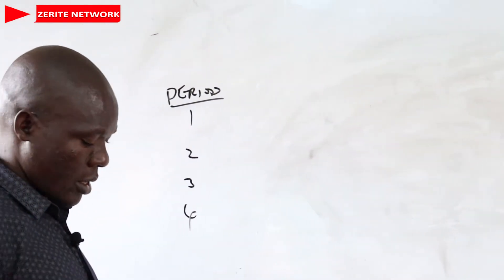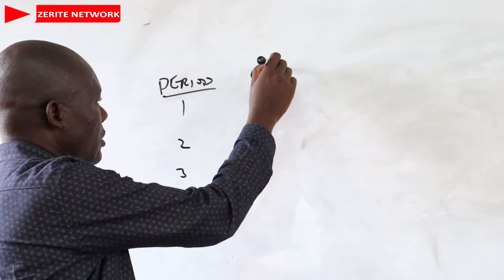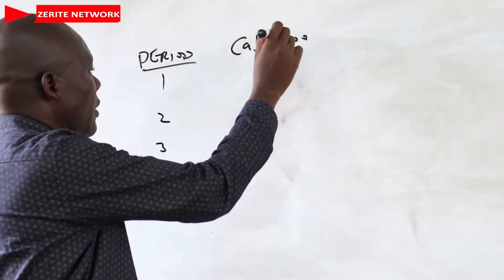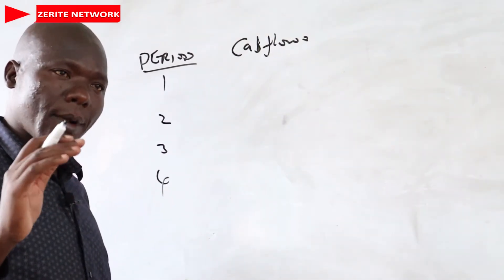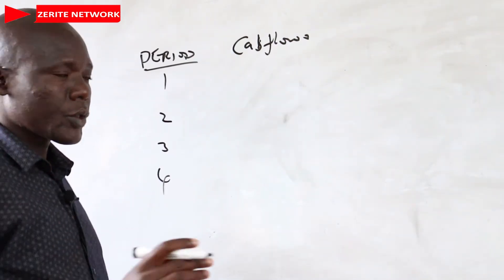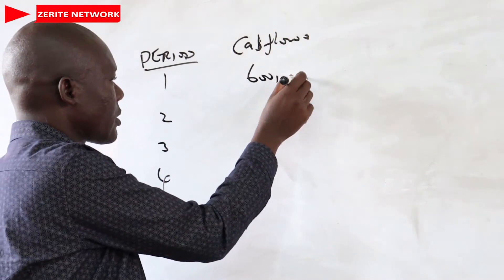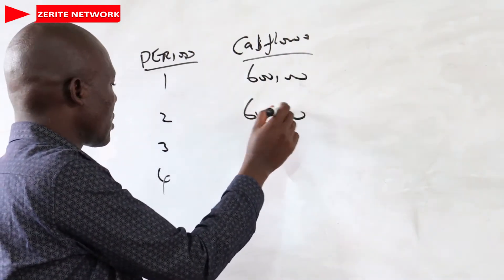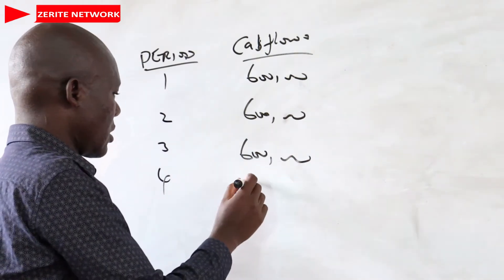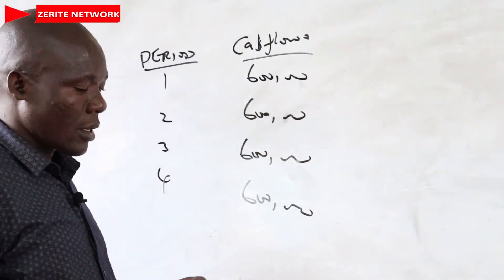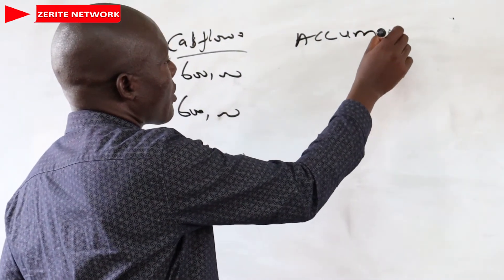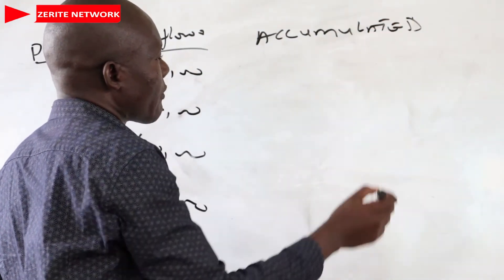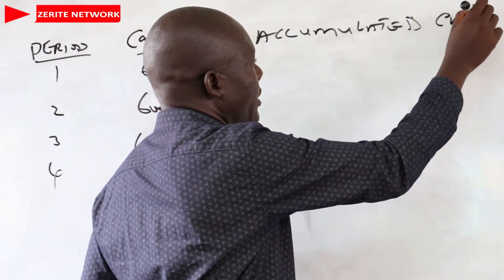We write the period which we have been told, one to four years. Then after that is the cash flows. The cash flows, we have been told that it is an annuity. An annuity means the same amount for all of the period we have been given. So we have been told $600,000, $600,000, $600,000, $600,000. Now we create a column of accumulated cash flow for us to know after how long will we recoup back the amount we invested. Accumulated cash flow.